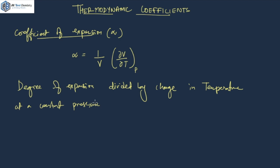This property of a particular material is called thermal expansion and it generally varies with temperature. Basically, your degree of expansion is dV upon V — this dV upon V is your degree of expansion — and the change in temperature is in the denominator part. This is your coefficient of expansion. The formula basically tells you at what rate a particular substance expands. We generally calculate this for solid and fluid substances.